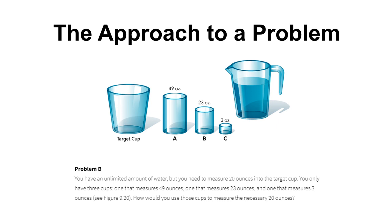That would solve Problem B, but what we've actually encountered here is a mental set. Our prior experience with Problem A predisposed us to solving this problem the same way. However, we didn't need to use Cup A at all. If we take a step back, we could have just used Cup B and subtracted Cup C: 23 minus 3 equals 20. That would have been a lot less work. Our past experience made us more likely to use the same solution without searching for new, more efficient answers.